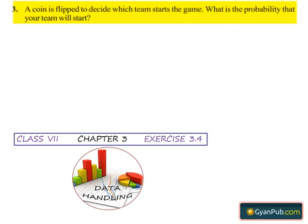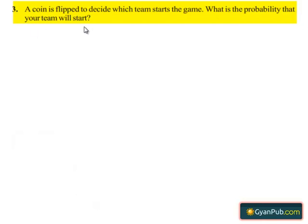Question number three: a coin is flipped to decide which team starts the game. What is the probability that your team will start? Now let's move on to the solution. When we toss a coin, there is a probability of getting a head or a tail.